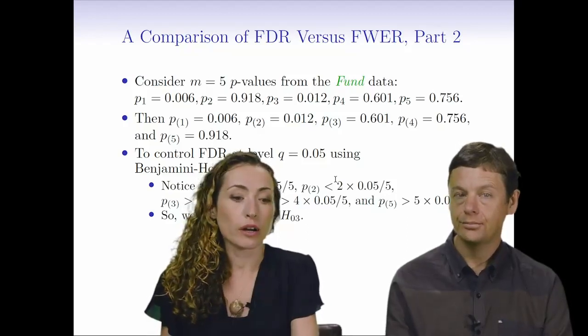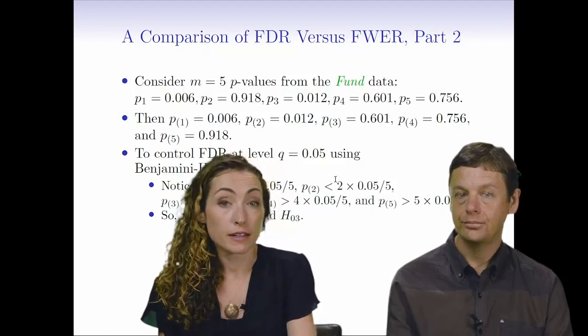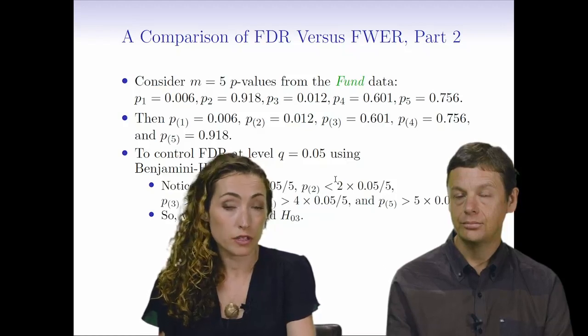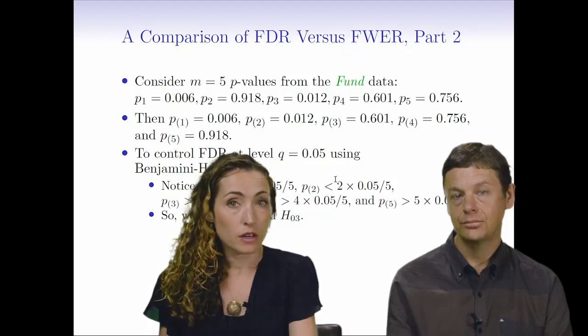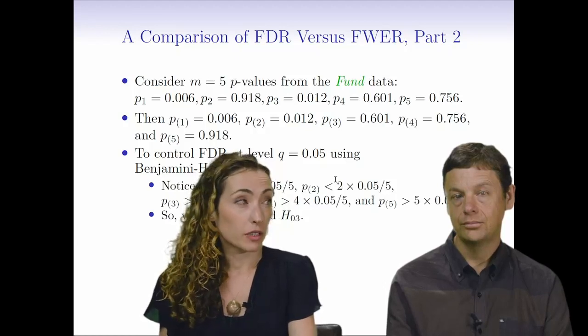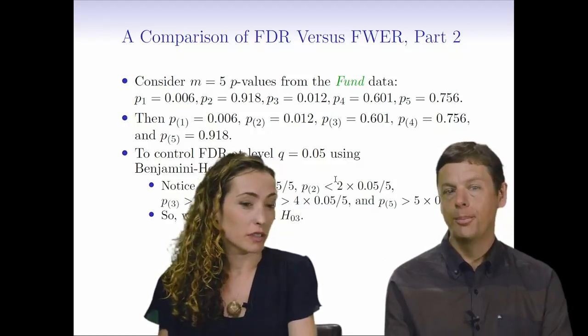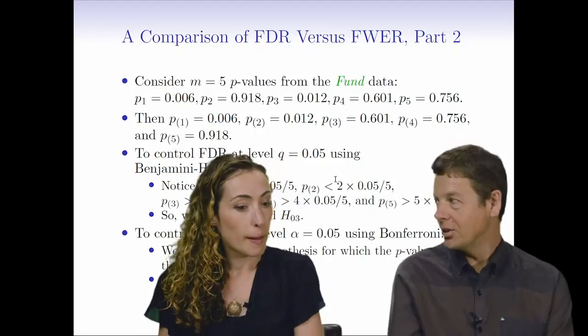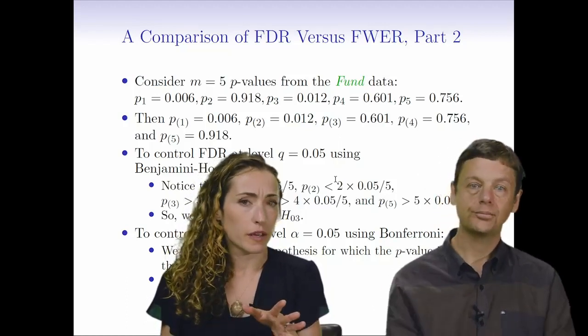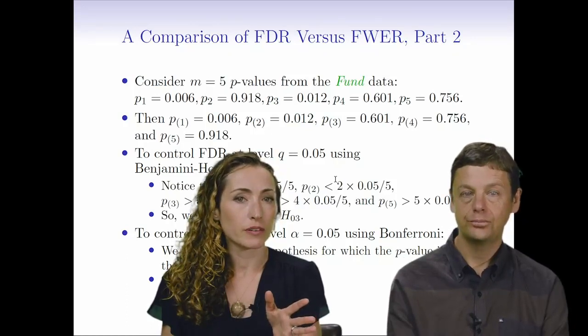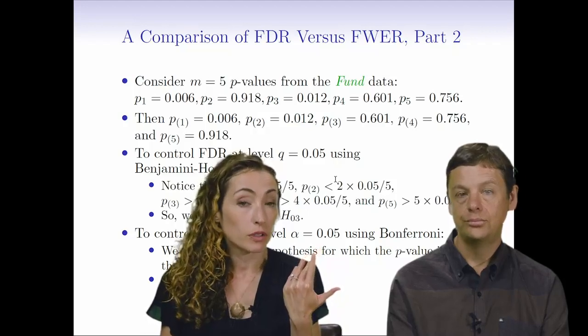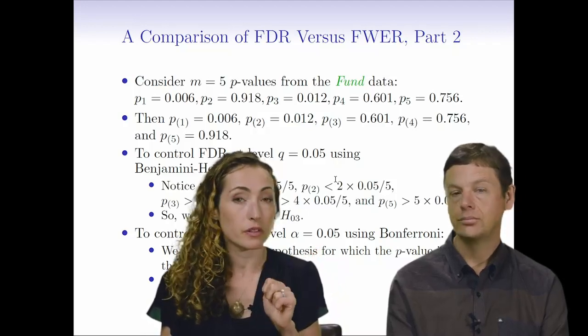This is actually an example where on this fun data, using FDR as opposed to the Holm procedure did not lead to more discoveries. But usually the time when we're going to see a difference between FDR and family-wise error rate is if M is really large. And here M is pretty small, so we're not seeing much difference. This is more like the classical setting where something like family-wise error rate could make sense. So here on this slide, we're seeing that using Bonferroni and controlling the family-wise error rate, we only reject H01. But if you can recall from a few slides ago, when we used Holm to control family-wise error rate, we did actually reject both the first and third manager.